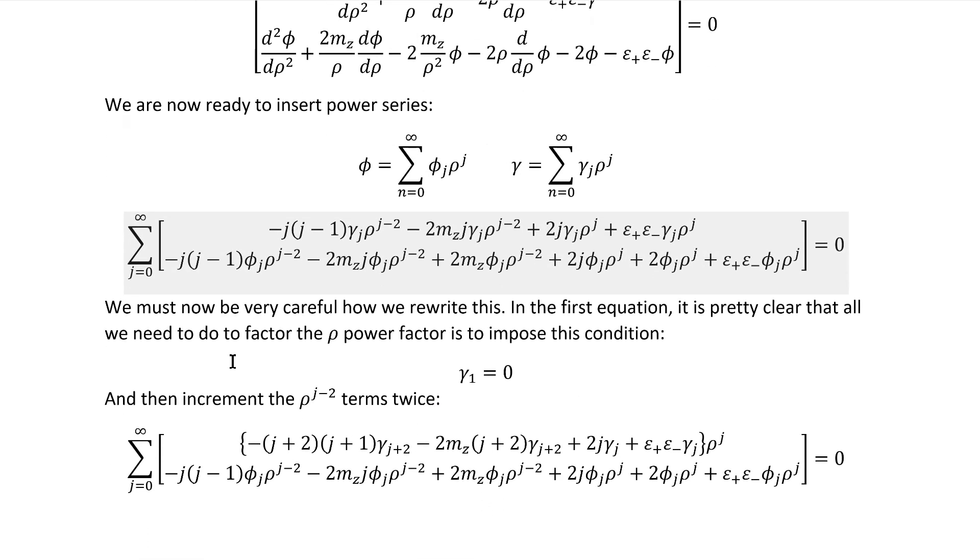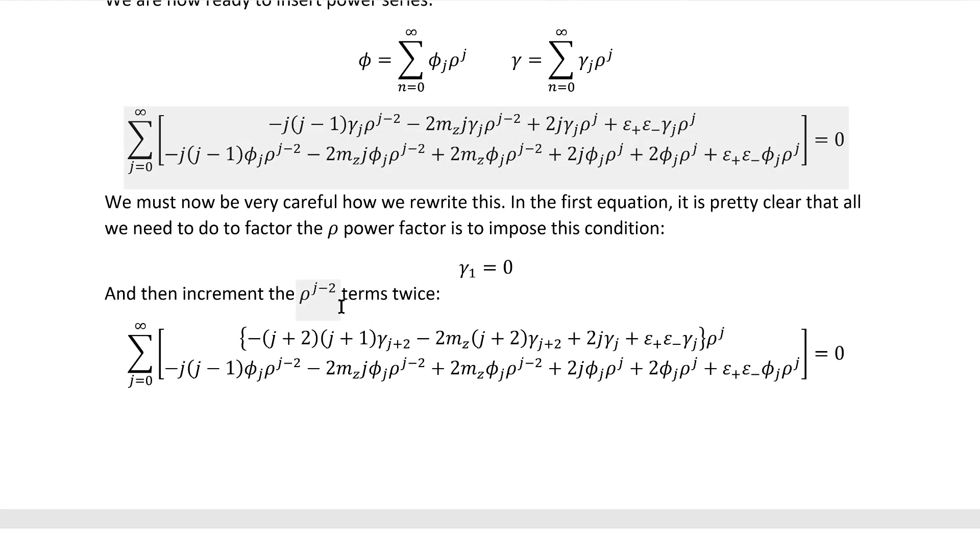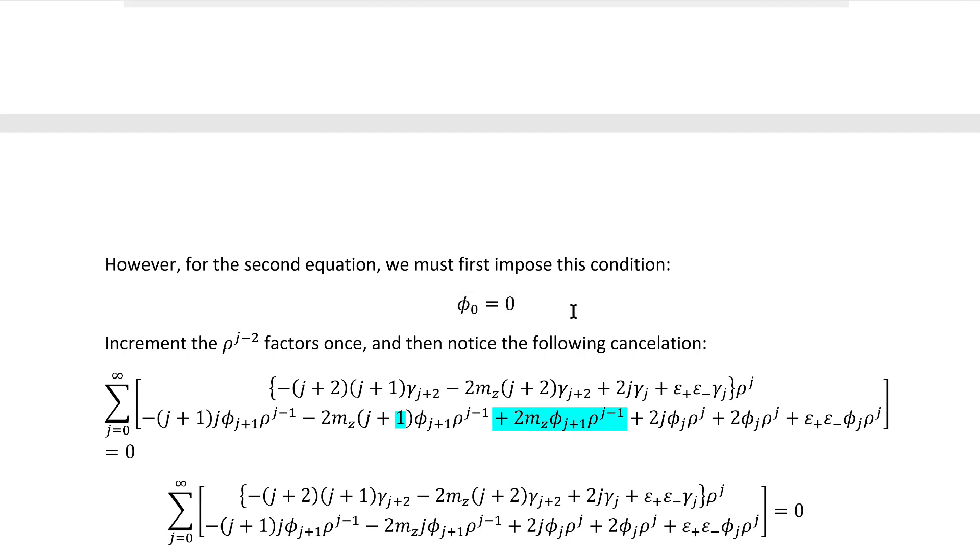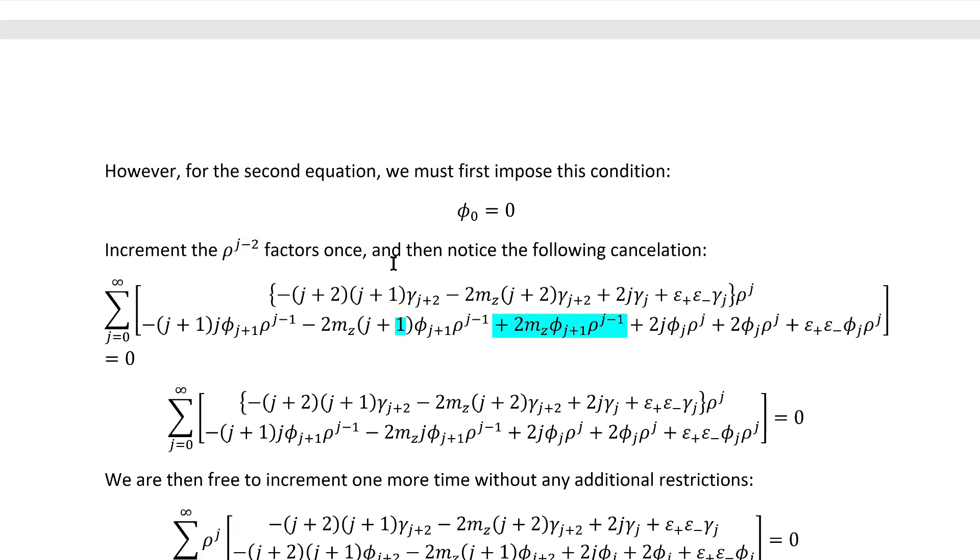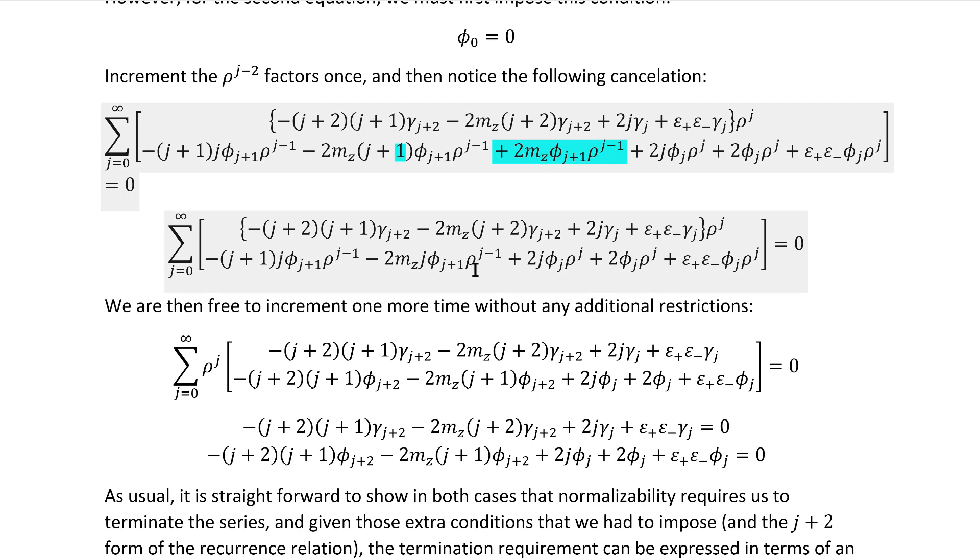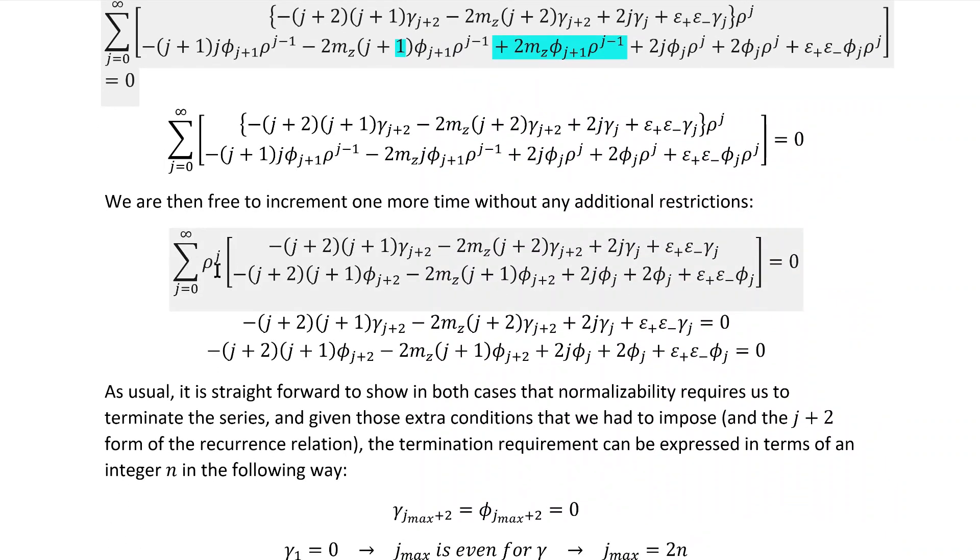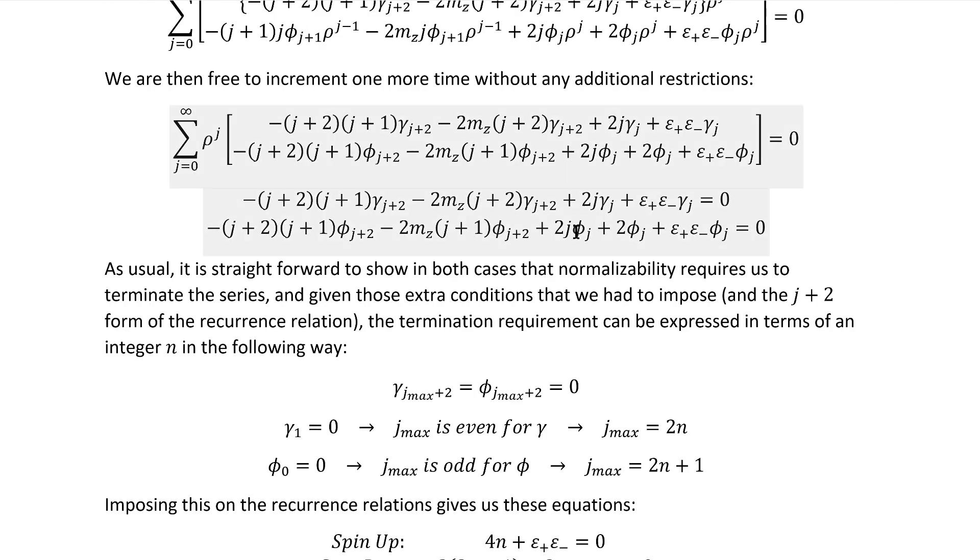We now are ready to insert power series. That gets us that pretty trivially. We must now be very careful with how we rewrite this. In the first equation, it's pretty clear that all we need to do to factor out the rho power factor is to impose this condition and then increment the rho j minus two terms twice. That gives us this top component here where rho j is perfectly easy to factor out. However, for the second equation, we must first impose this condition and then increment the rho j minus two factors once, after which we're free to carry out this cancellation here, which leaves us with a j on this rho minus one factor. We can therefore increment these rho j minus one terms one more time in order to get these where we have the rho j term factored out of both of them. We therefore have these recurrence relations.